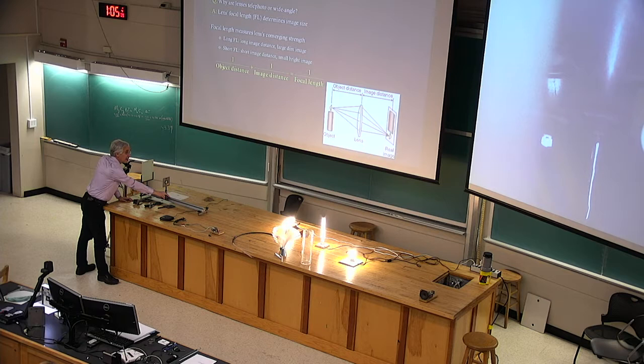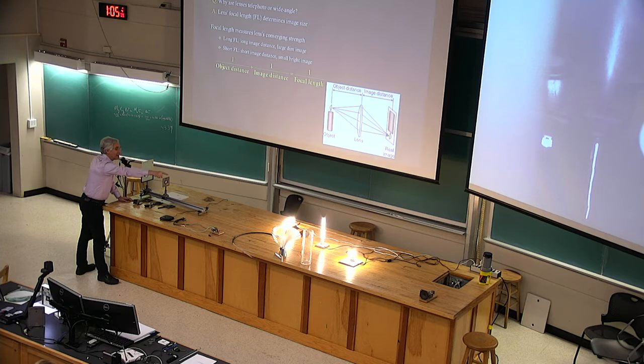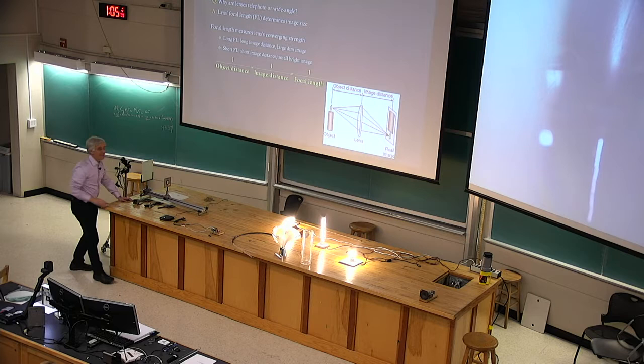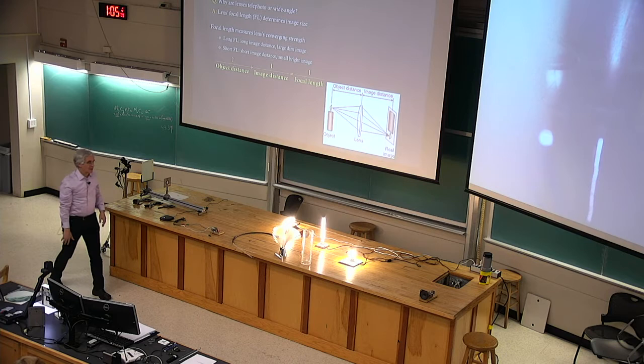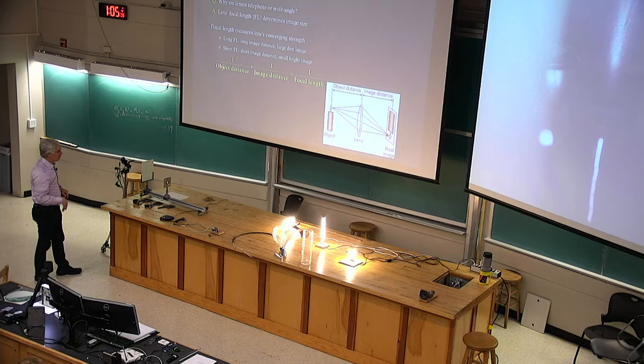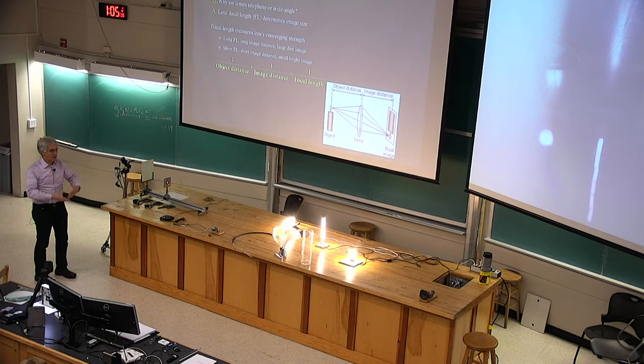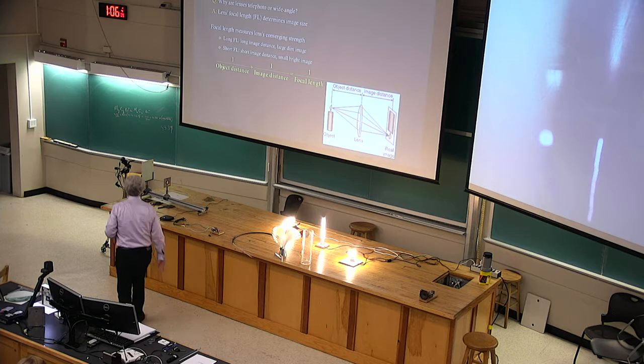Here now I've got it focused on the tall filament. To focus on a more distant object like the compact fluorescent, I have to move the lens farther from the screen. And to focus on the very nearby circle, I have to move the lens farther from the screen. That all had to do with how the rays from those objects are diverging. The nearer the object is to the lens, the more its rays are diverging, the harder it is for the lens to bring those rays together, the farther beyond the lens the real image forms.